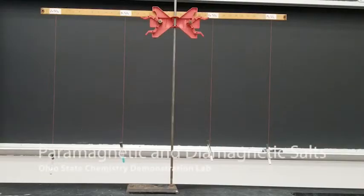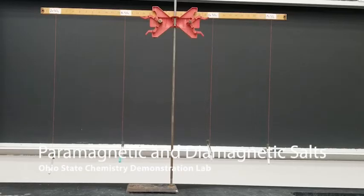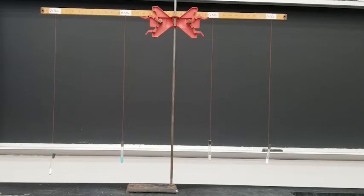This is a collection of paramagnetic and diamagnetic salts. A paramagnetic substance is attracted weakly by a strong magnetic field. This attraction results from interactions of the magnetic field with the unpaired electrons in the substance.